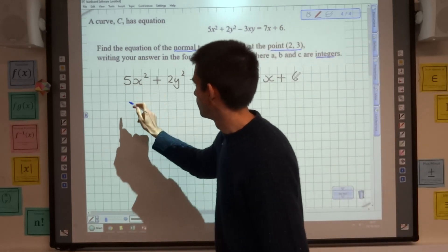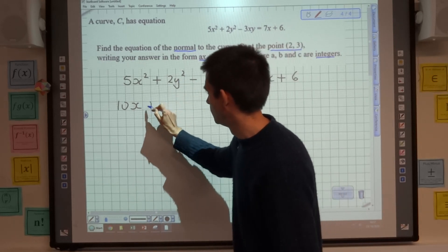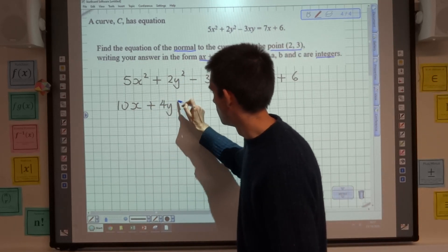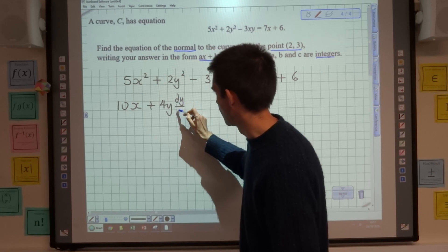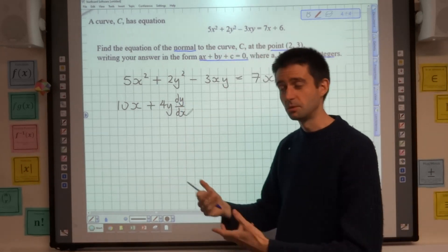So 5x² is going to differentiate to 10x. 2y² will differentiate to 4y dy/dx. Remember, we get that dy/dx term because we're differentiating a function of y in terms of x.